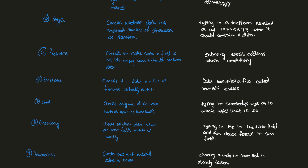Next we have limit check. Limit is similar to range, but it only checks one side — either the lower limit or the upper limit, whereas range checks both. For example, if the upper age limit for a course is 20 years, a 10 or 15-year-old can take the course but a 25-year-old cannot. However, if someone entered minus two years, it would be accepted because there is no lower limit check — that is a limitation of the limit check.